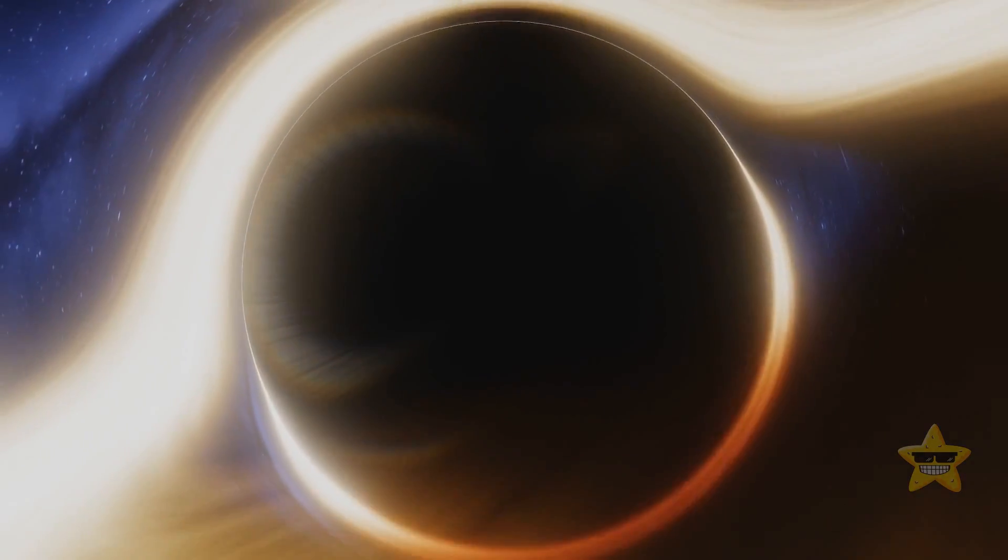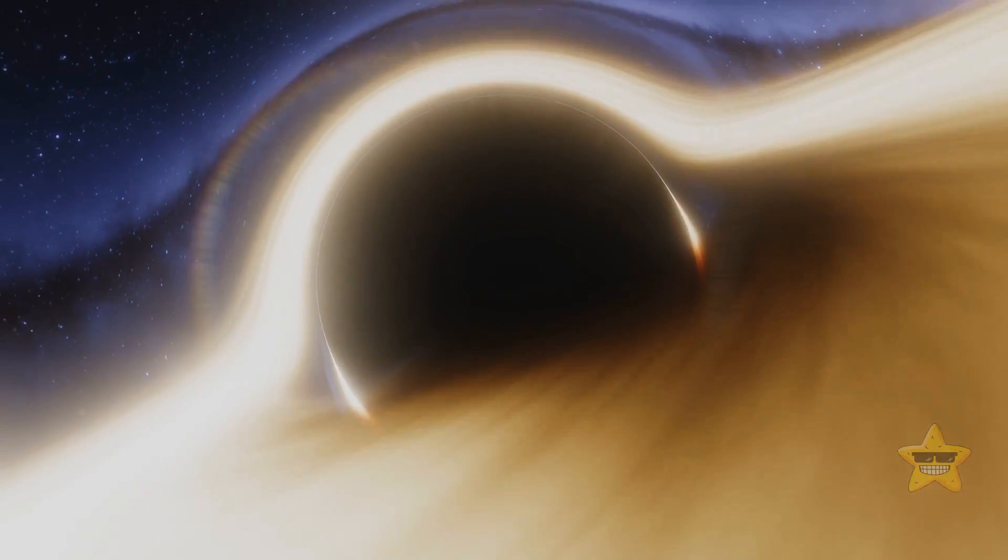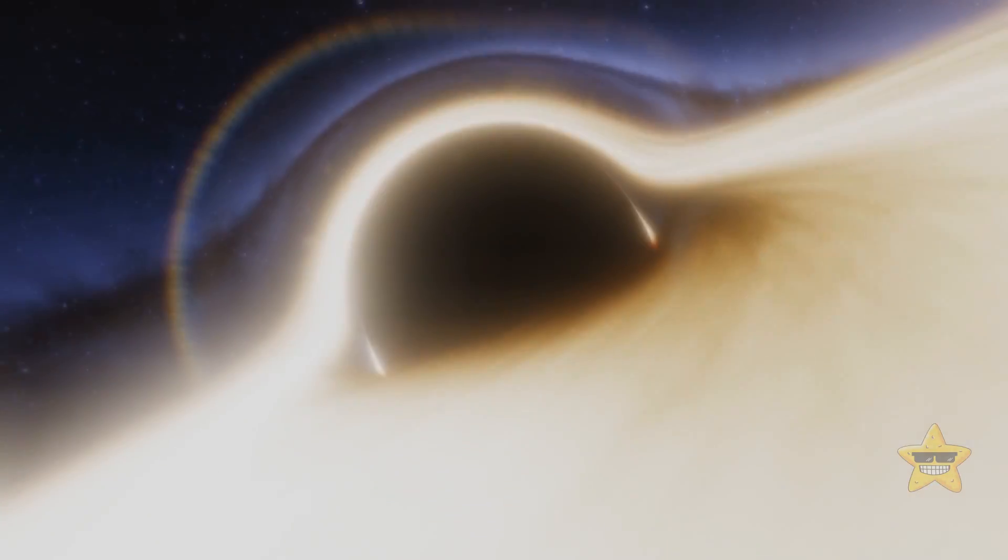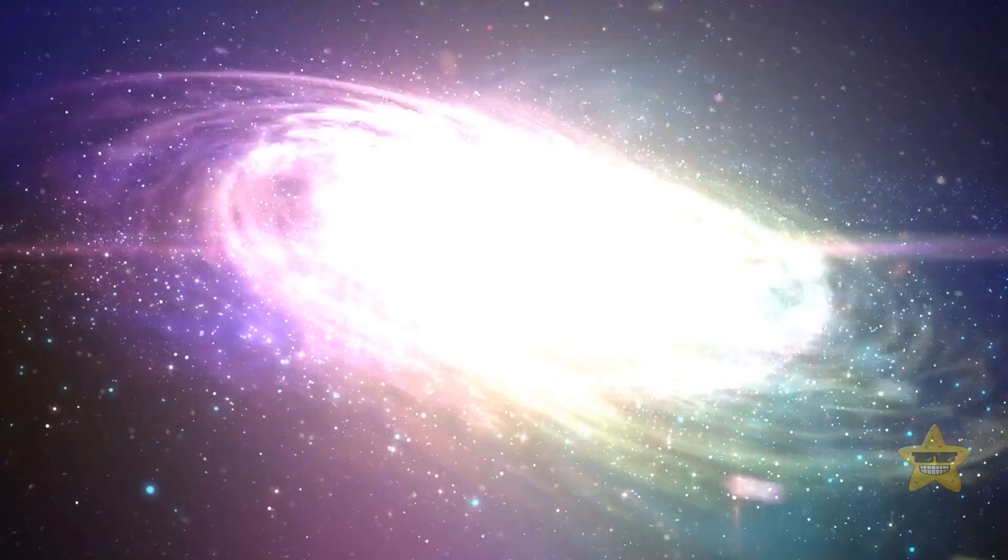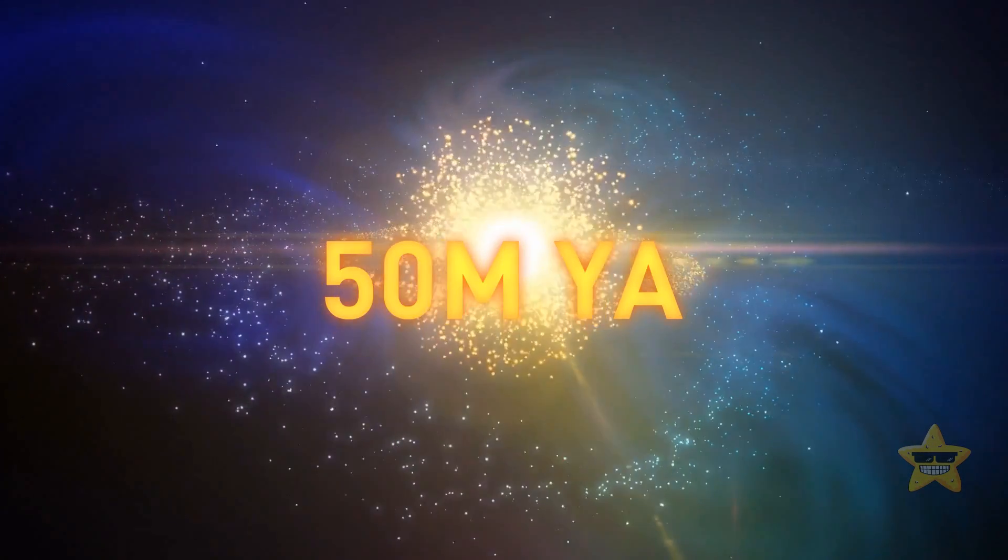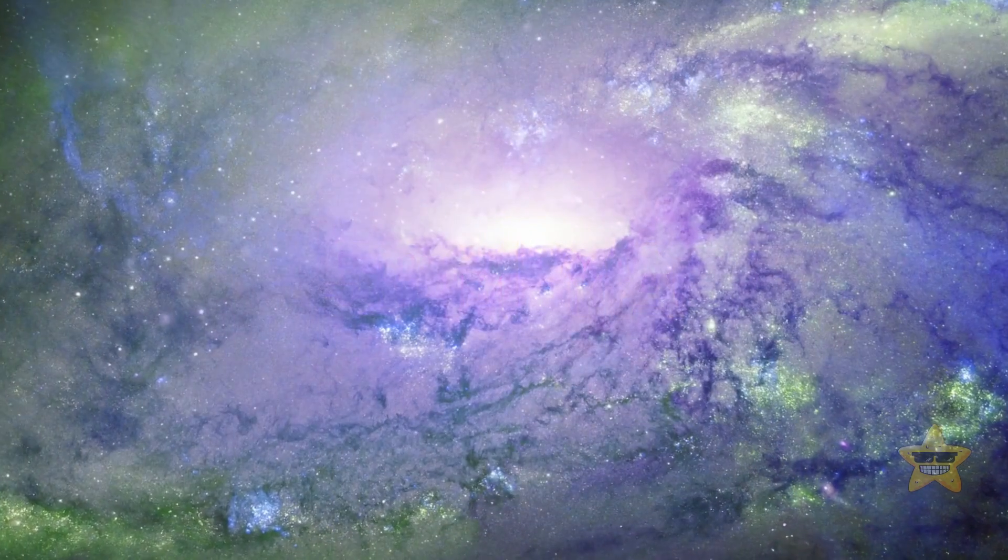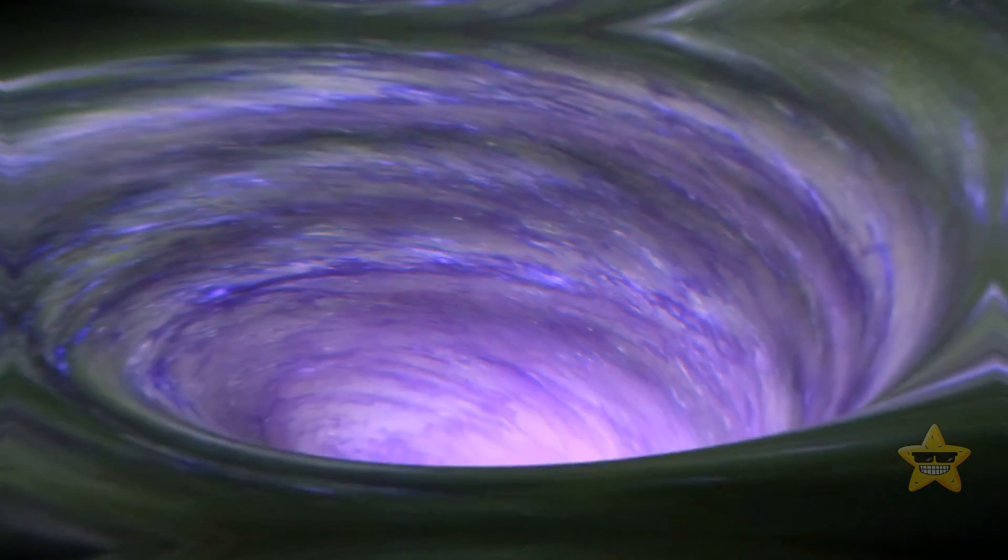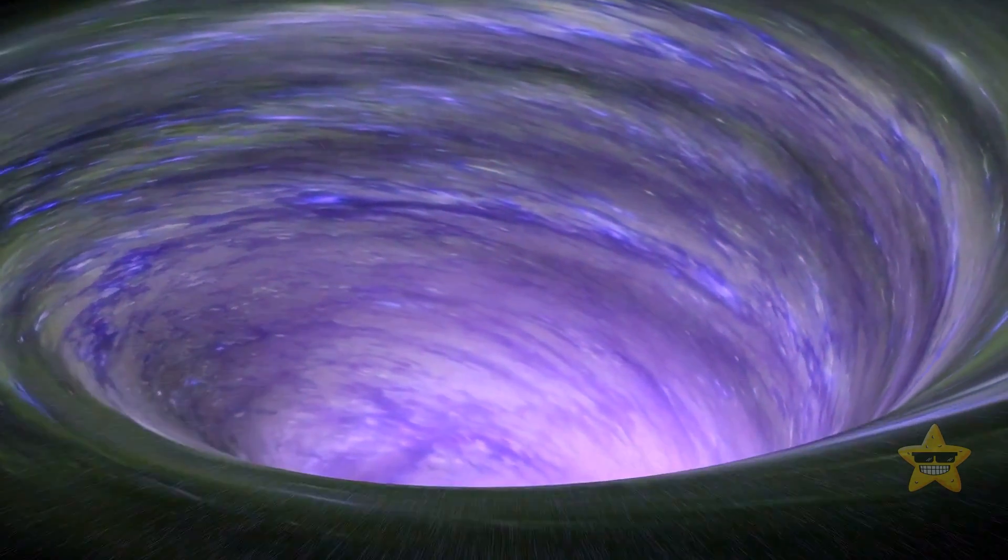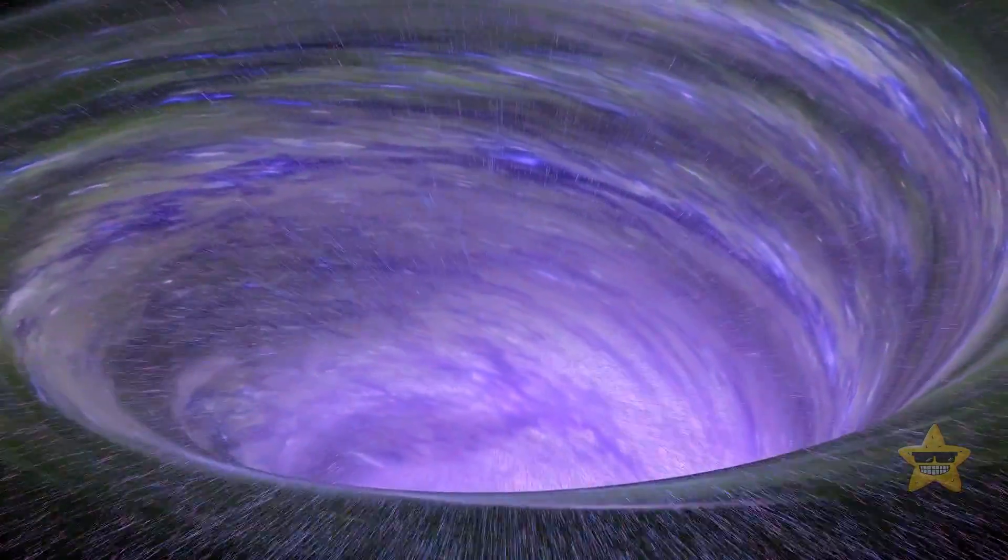This runaway black hole we're talking about is probably the result of many collisions of giant black holes. Their home galaxies probably merged around 50 million years ago, which brought these two together. Then, an intruder likely appeared, another galaxy with its very own giant space vacuum. And things quickly became chaotic.